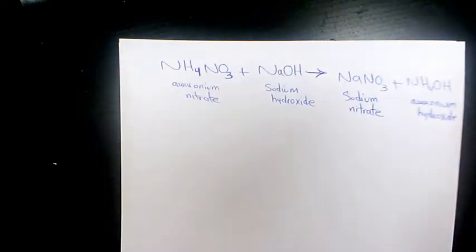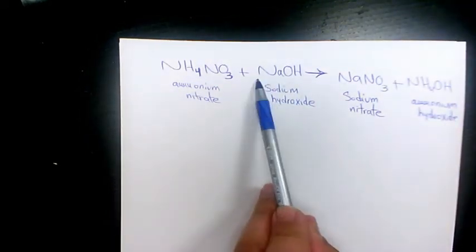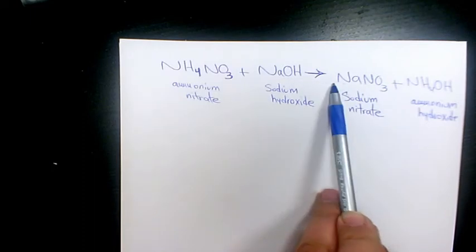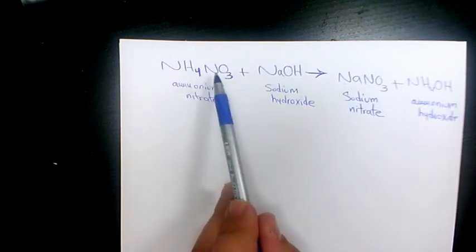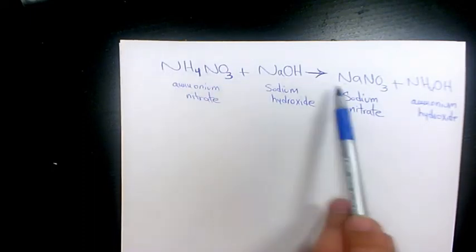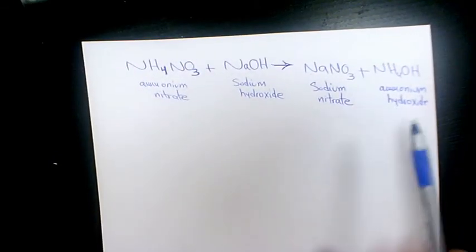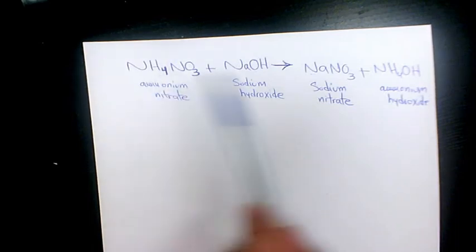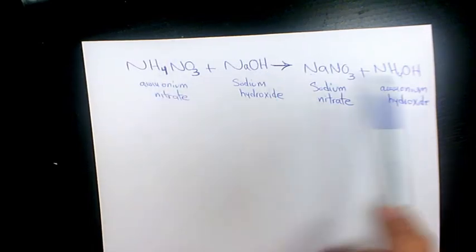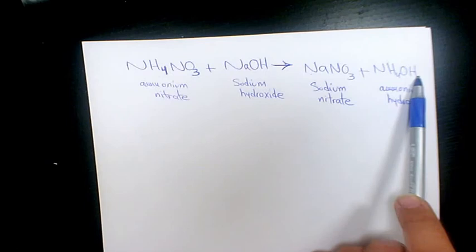Let's see how to balance them. As you see here, the number of sodium is one here and one as well. Nitrogen: one and one, two here, we have one and one, two. So nitrogen is also balanced as well. What about hydrogen? We have four and one, five, and here we have four and one, five.